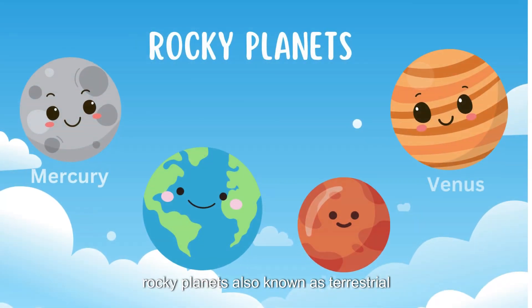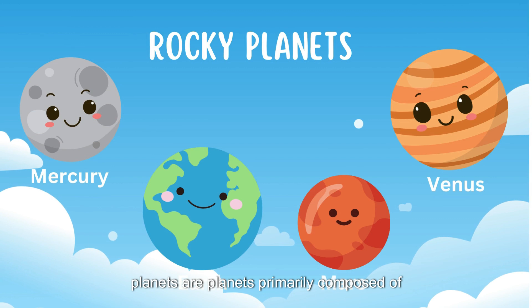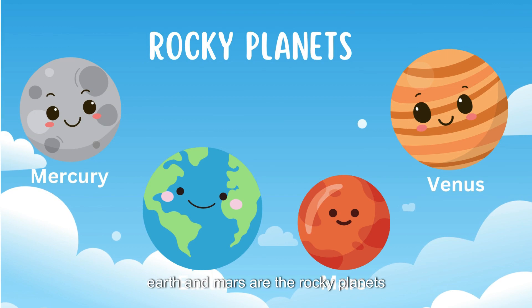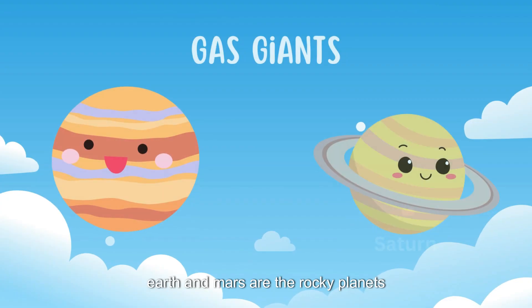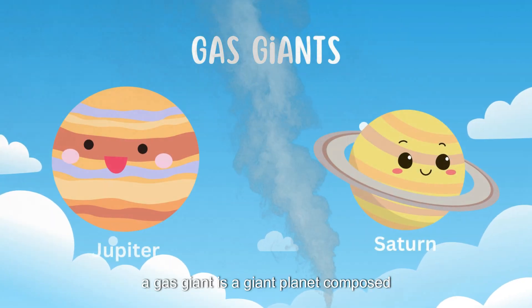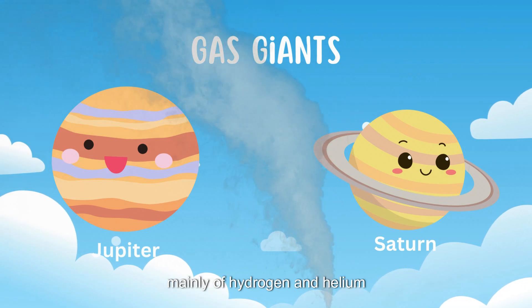Rocky planets, also known as terrestrial planets, are planets primarily composed of silicate rocks or metals. Mercury, Venus, Earth and Mars are the rocky planets. A gas giant is a giant planet composed mainly of hydrogen and helium.